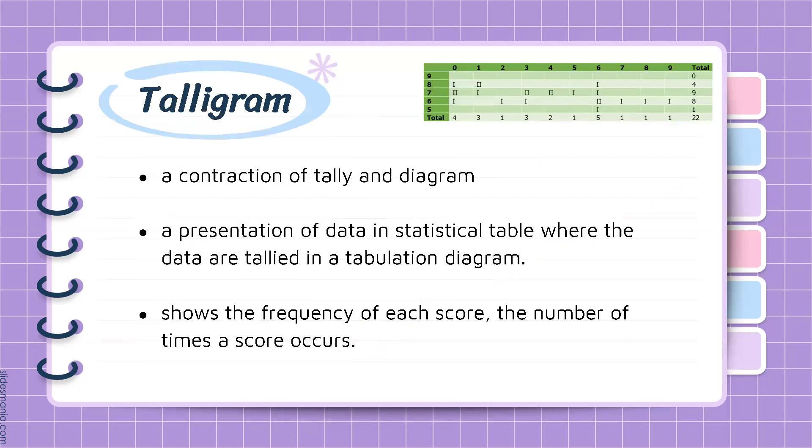A Talligram is a contraction of tally and diagram. It is a presentation of data in a statistical table where the data are tallied in a tabulation diagram, just like what is shown in this slide. Talligram shows the frequency of each score, that is, the number of times a score occurs.